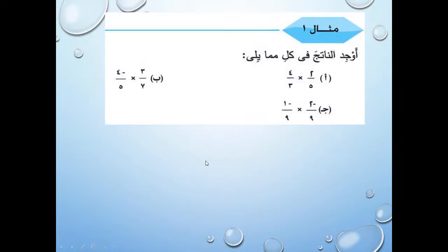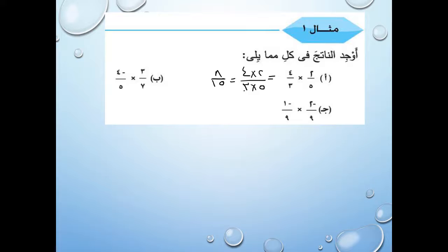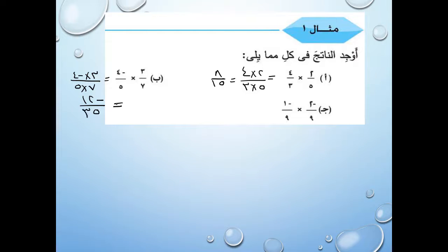واضحة كده عملية الضرب. بناخد بقى المثال اللي موجود: 2/5 × 4/3 تسوي 8/15. لو في اختصارات ممكن نعملها من البداية. هنا: 3/7 × (-4/5) تسوي سالب 12 على 35.